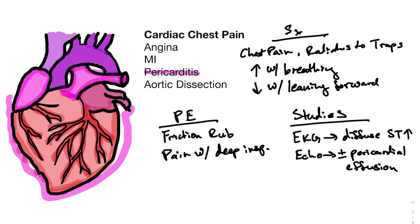The studies we usually get are pretty similar to angina and myocardial infarction. You're going to get an EKG, and on the EKG you're going to see diffuse ST segment elevations. That is similar to what you would see in a myocardial infarction, but in an infarction it's specific to a specific territory of the heart, whereas in pericarditis you will see all of the different leads of the EKG having ST segment elevations. I will go over EKGs with you and this will make a little bit more sense then.